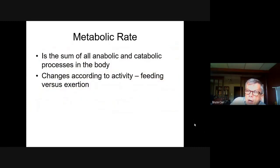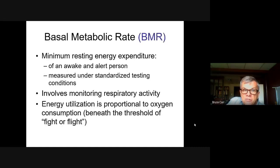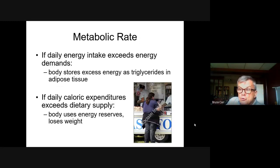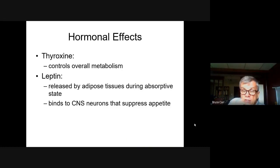Metabolic rate is the sum of all metabolic reactions — catabolism and anabolism — and it's affected by our daily activity, specifically when and how much we feed and exercise. Basal metabolic rate is proportional to oxygen consumption. If you take in more calories than you burn, you are storing positive energy and weight goes up; if you burn more than you consume, you have to remove mass to meet energy needs and weight goes down.